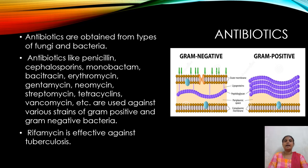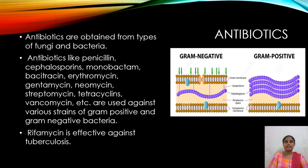Antibiotics are obtained from various bacteria and fungi and are used to treat many diseases of humans and animals. A well-known antibiotic is penicillin. There are many other types of antibiotics like gentamicin, neomycin, streptomycin, erythromycin, bacitracin, etc. They are used to treat various strains of gram-negative and gram-positive bacteria.